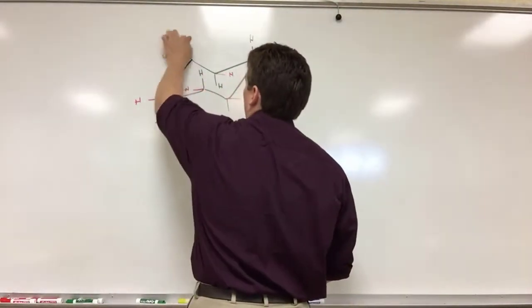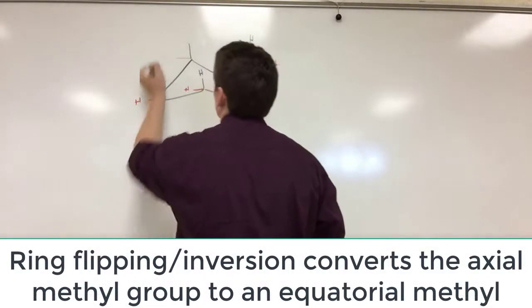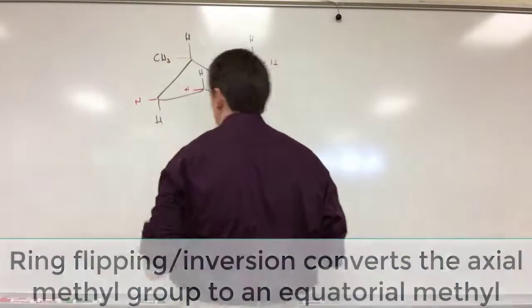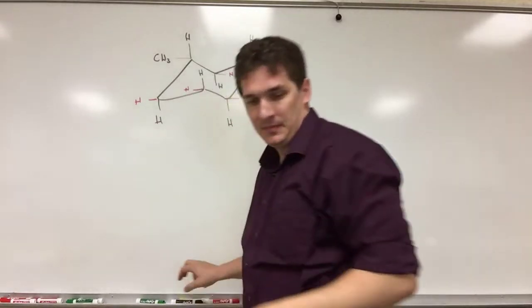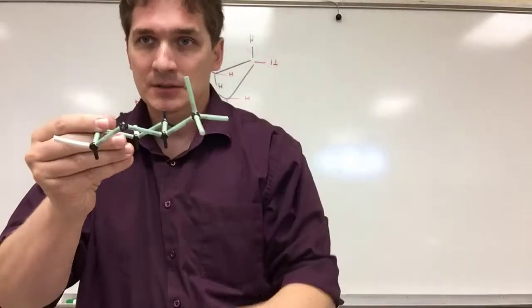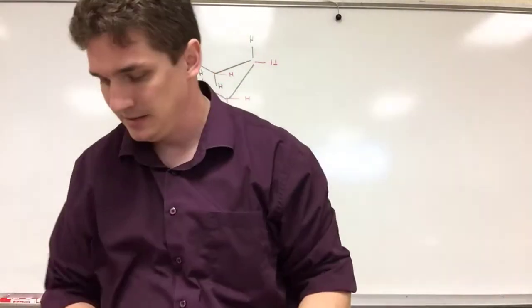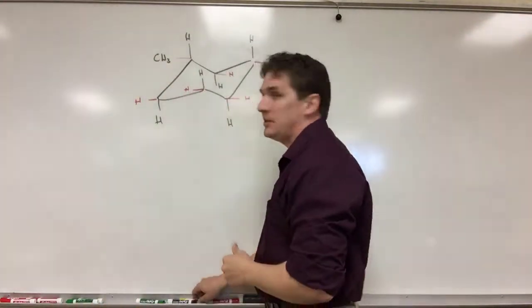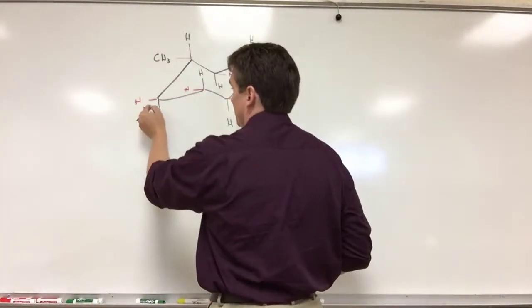So by ring flipping alone, we can make this CH3, and we can make this H. Now, if we look along the equatorial bond, and I'll tell you what, we'll draw the Newman projection based along this bond.